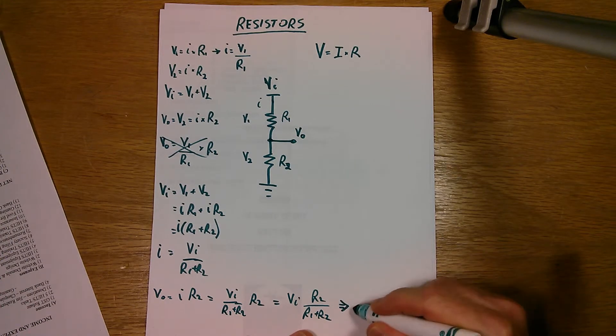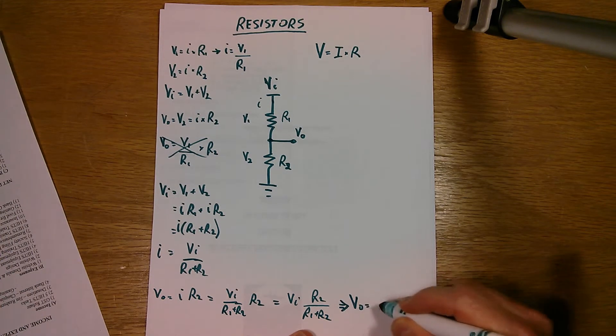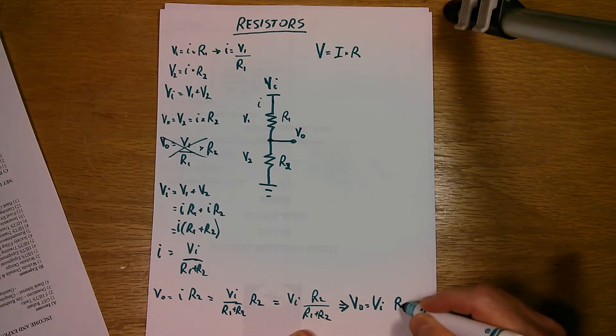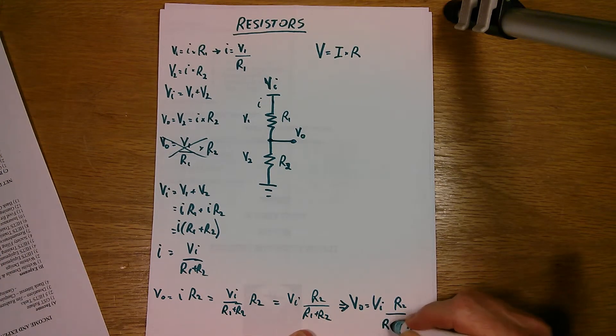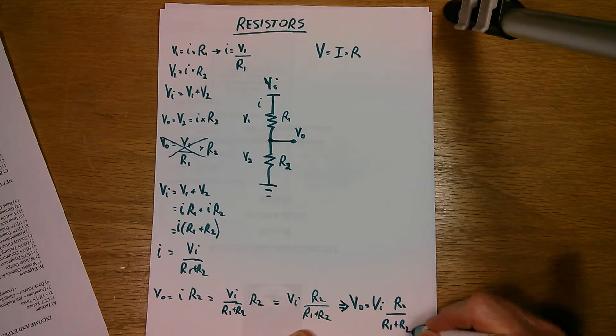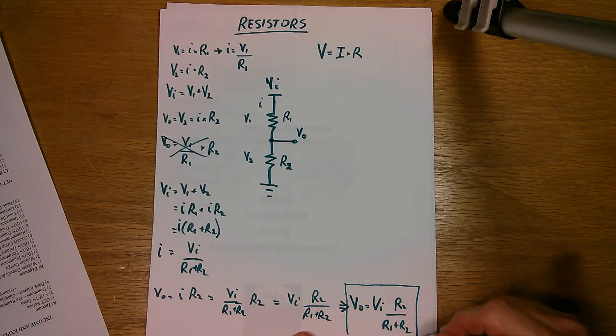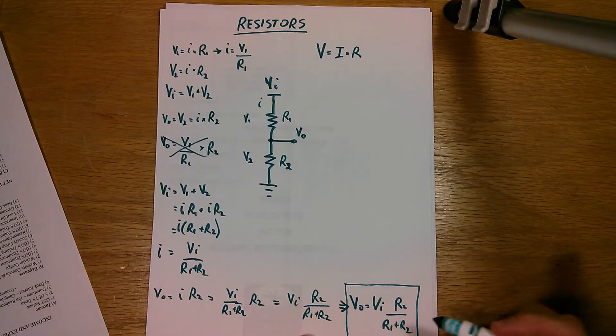So this simple calculation, the simple rule of thumb here for determining what V_out is over here is you take the resistance that it's across R2 and divide it by the sum of the two resistors and then multiply it by V_in. And that gets you the value of V_out. So this is a good equation to remember for calculating resistor dividers. V_out equals V_in times R2 over R1 plus R2. This is a good formula to remember. It's good for making quick and easy voltage dividers.